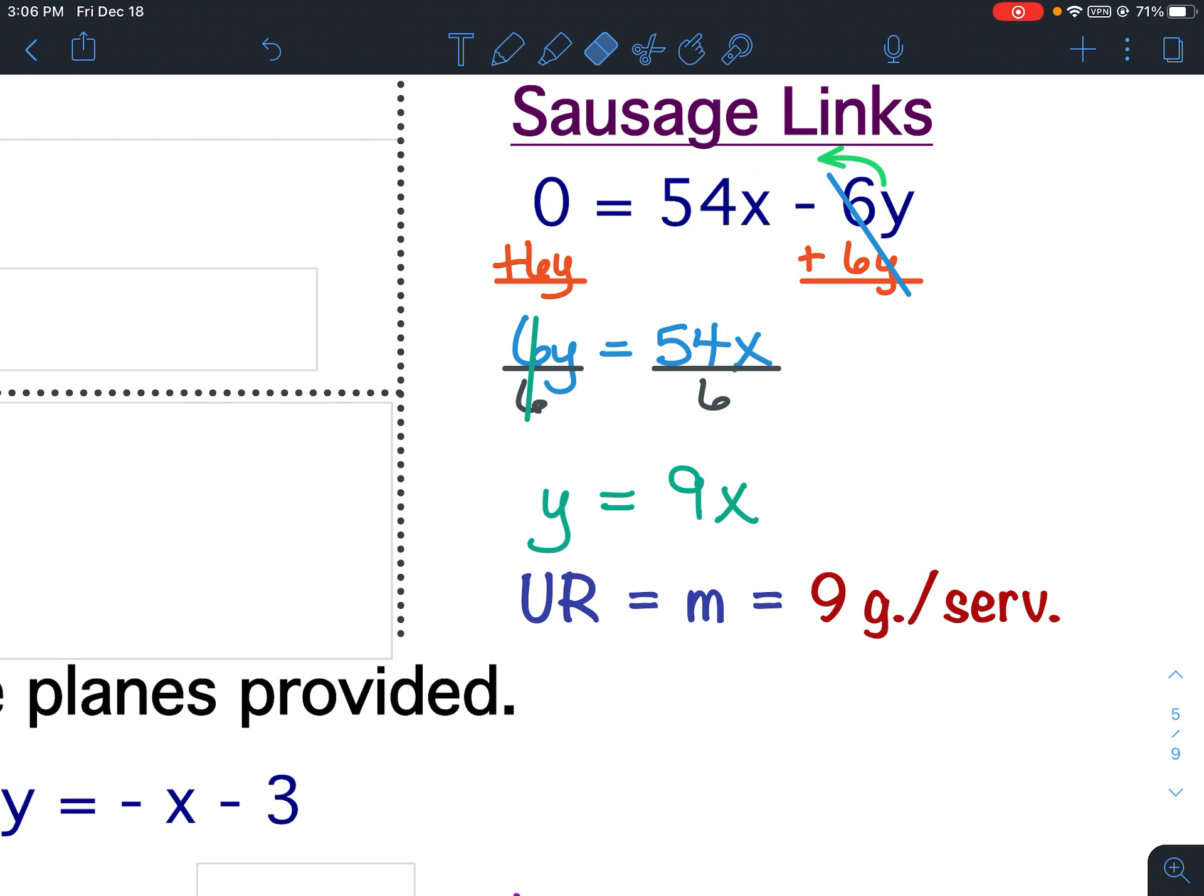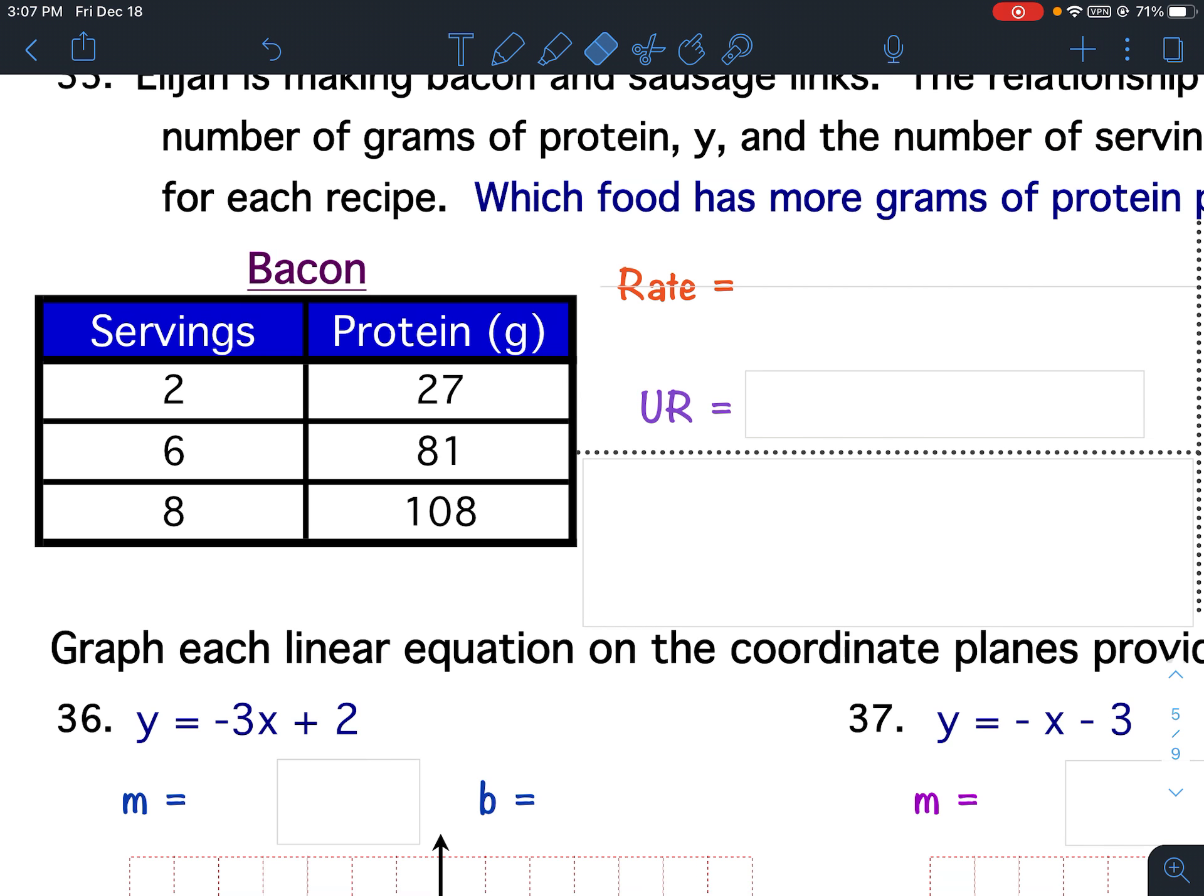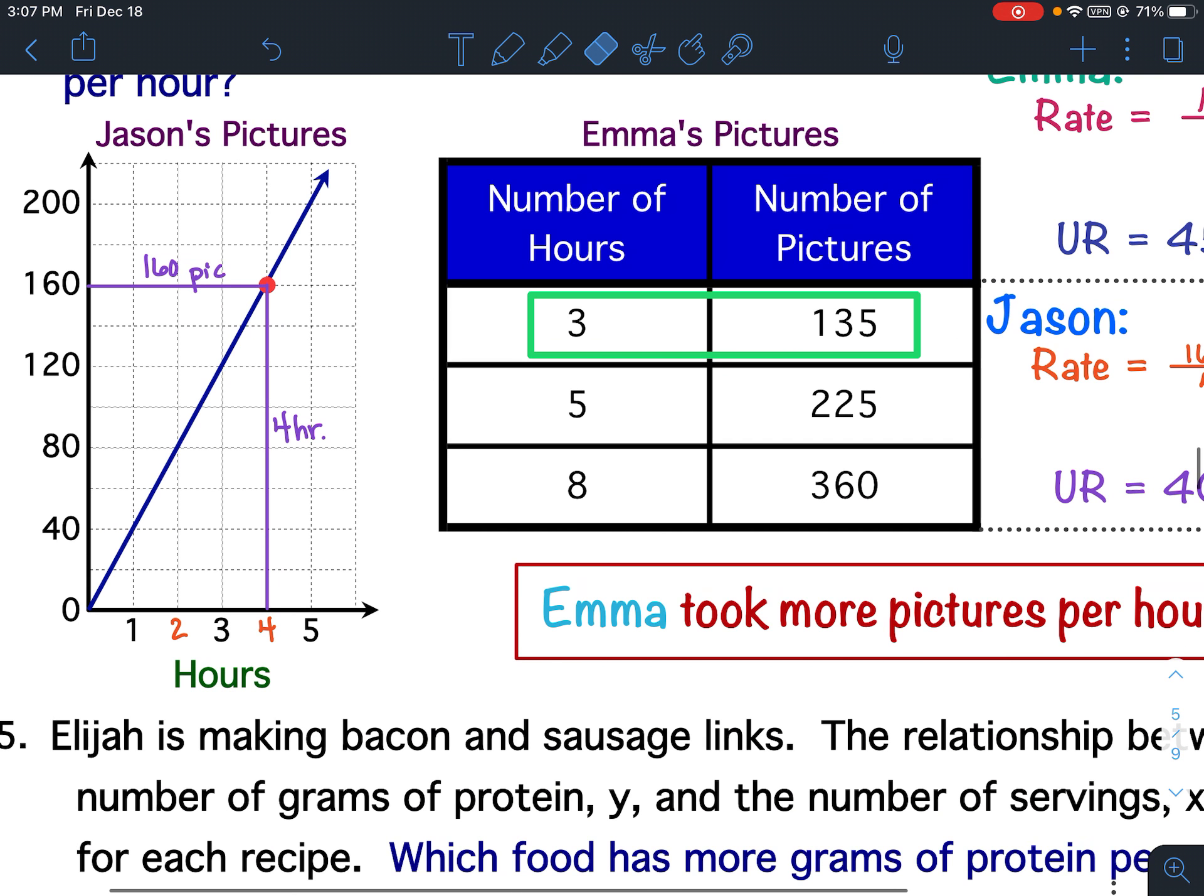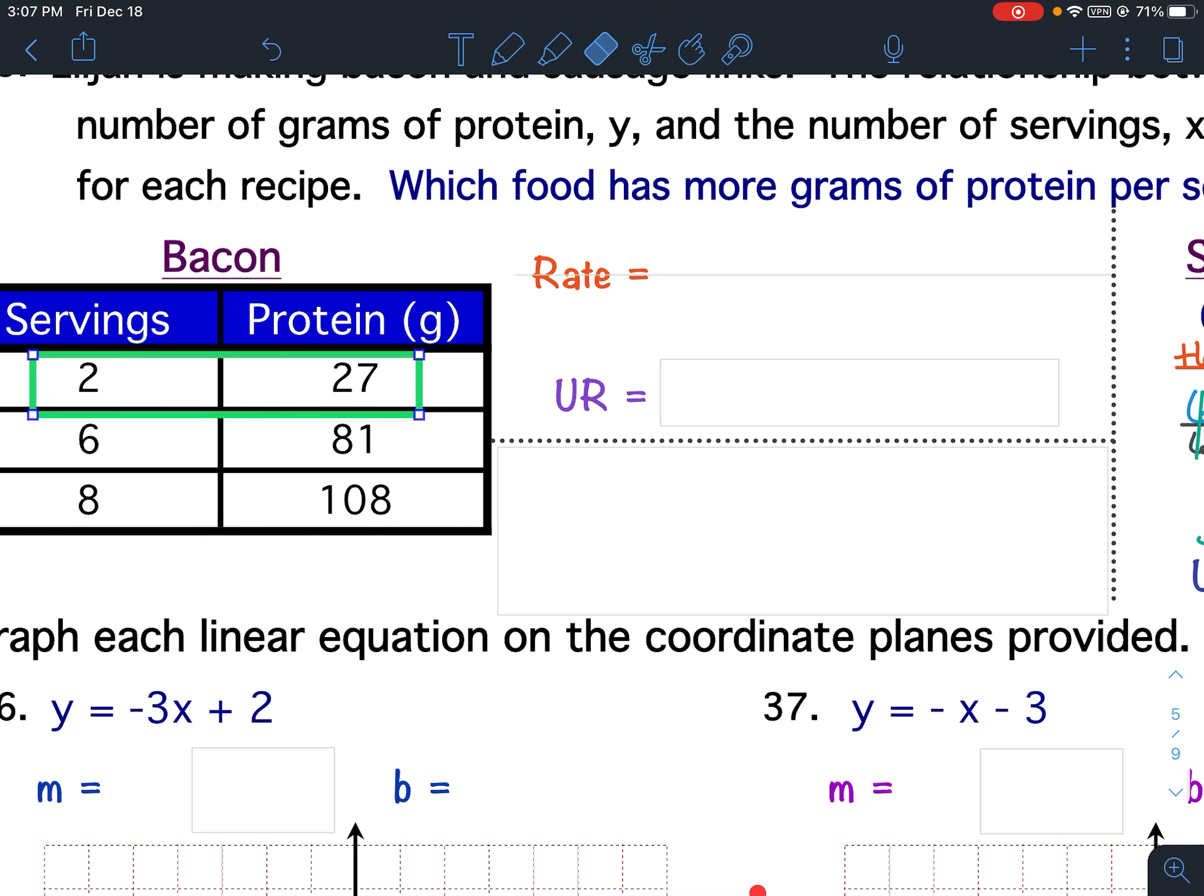Please make sure you wrote everything down. Now let's look at bacon. We're going to do the same thing for bacon. I'm going to pick one of these, and I'm going to pick the ones that are easier to work with. So I'm going to use the 2 and the 27.